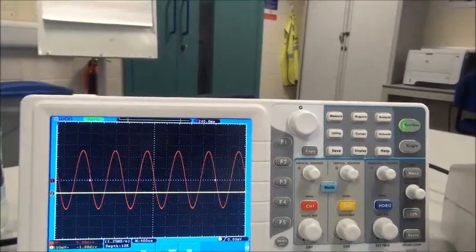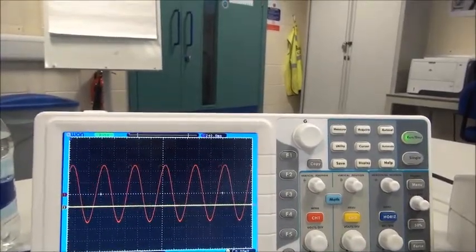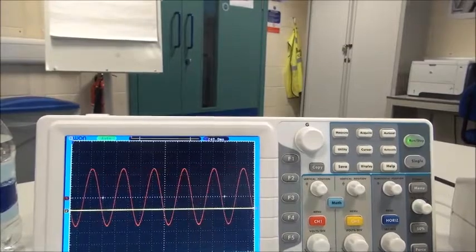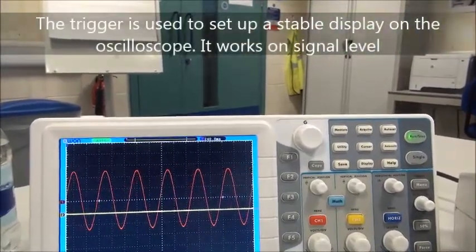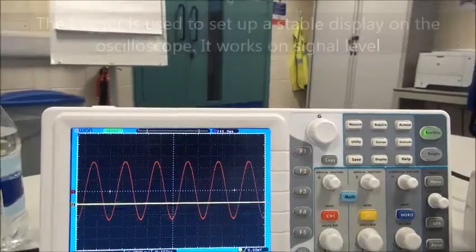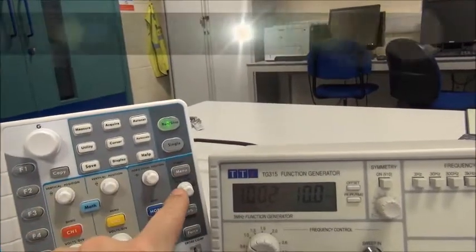The other thing is that the signal's moving across the screen. It's quite annoying. And what we would need to do there is set up something called the trigger control. The trigger is there to get a stable display, and we've got the trigger level, which is over here. That's the trigger control there.